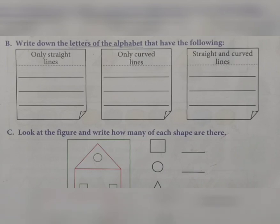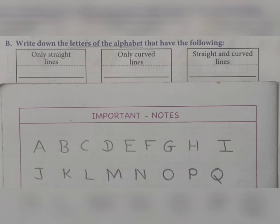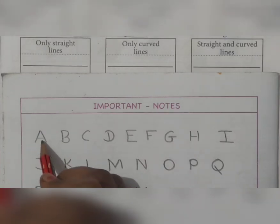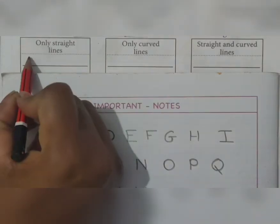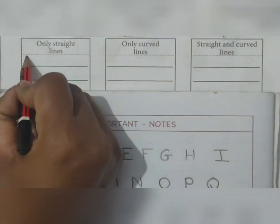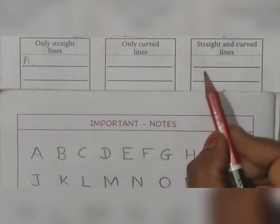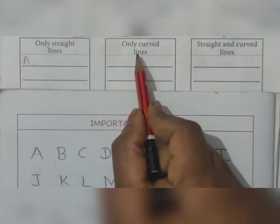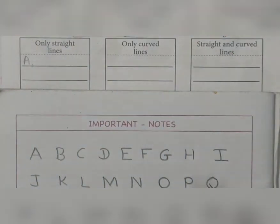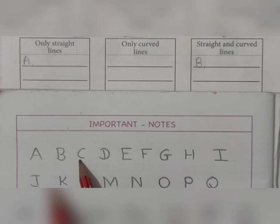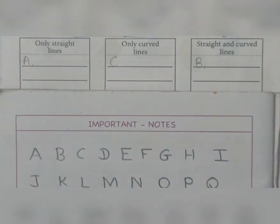Now I have written all the alphabets here and we will classify them. Letter A is made up of only straight lines, so A goes in the only straight line column. B has one straight line but also curved lines, so B goes in the straight and curved lines column. C has only curved lines, so C goes in the only curved lines column.